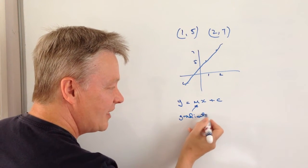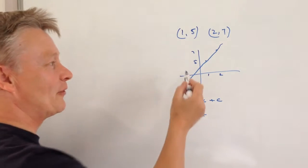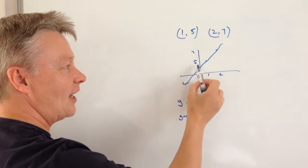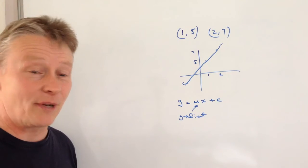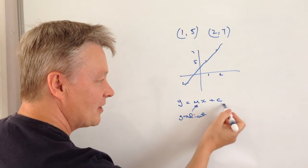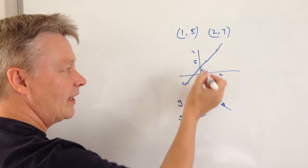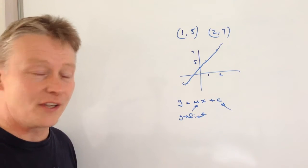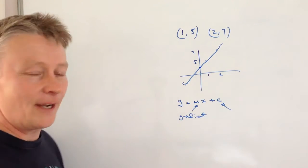So in other words, it's how steep the line is. It's whether it's like that or it's fairly shallow or it goes up at a fairly steep angle. This value here c is what they call the y-intercept, so where it crosses the y-axis. It's actually this bit here.